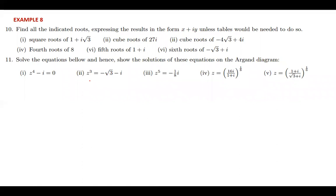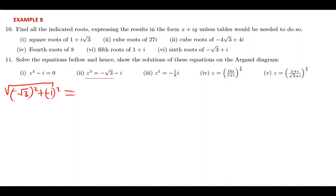We have negative root 3 minus i. The first thing we have to do is convert this complex number to polar form. The magnitude will be the square root of (negative root 3) squared plus (negative 1) squared, which is the root of 3 plus 1, giving us the root of 4, which is just 2.